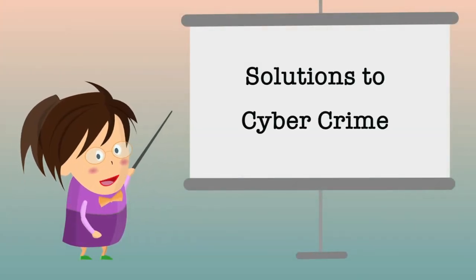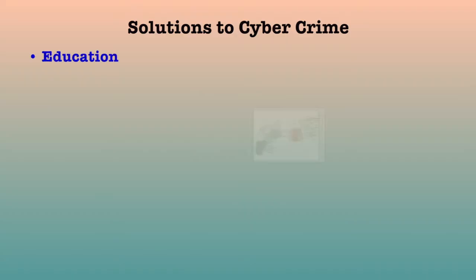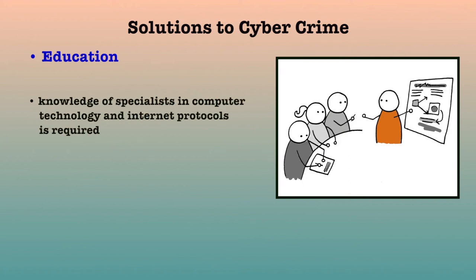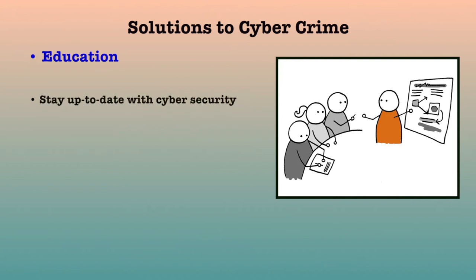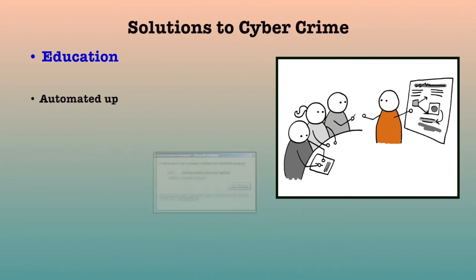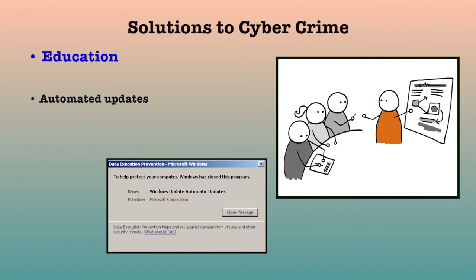Now we will discuss various solutions to cybercrime. The first solution is education — cybercrime is difficult to prove as it lacks the traditional paper audit trail, which requires knowledge of specialists in computer technology and internet protocols. Hence, we need to educate citizens that if they are going to use the internet, they need to continuously maintain and update the security of their systems. We also need to educate corporations and organizations in the best practices of effective security management. For example, some large organizations now have a policy that all systems in their purview must meet strict security guidelines, with automated updates sent to all computers and servers on the internal network, and no new system is allowed online until it conforms to the security policy.